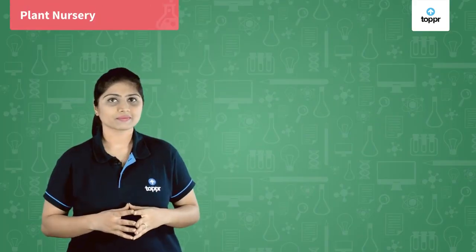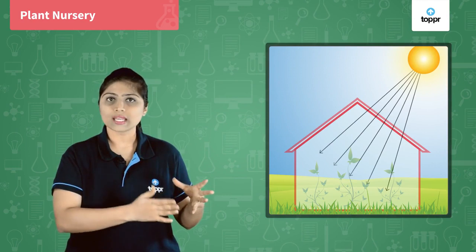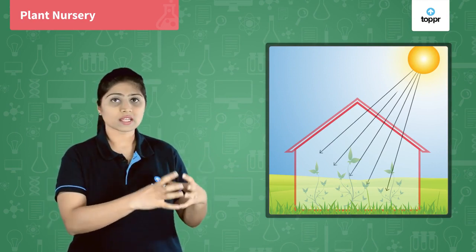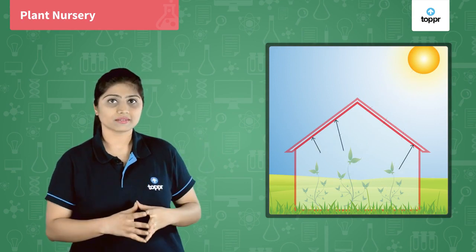Sun — it is the most important source of energy for life on earth. Have you ever seen how sun rays are used in a plant nursery? Let us see what happens there. In a nursery, sun rays are allowed in. Now some of the radiations of sun are absorbed there and some are reflected.